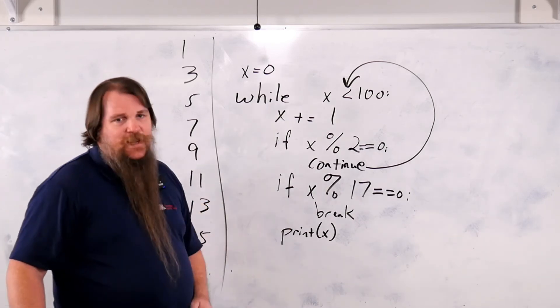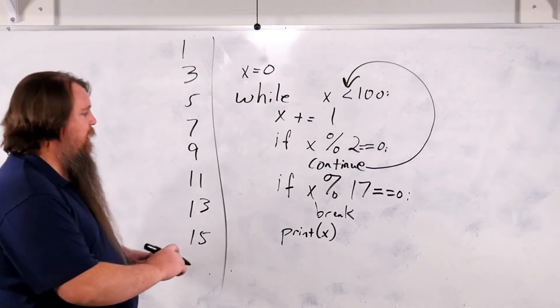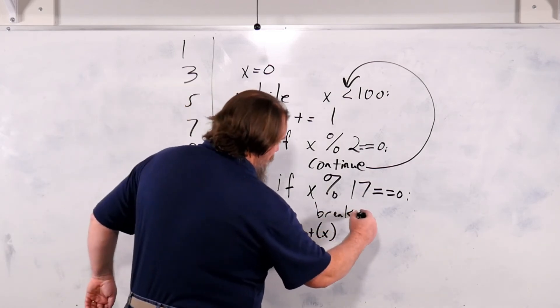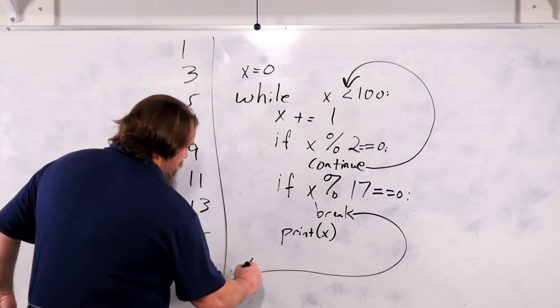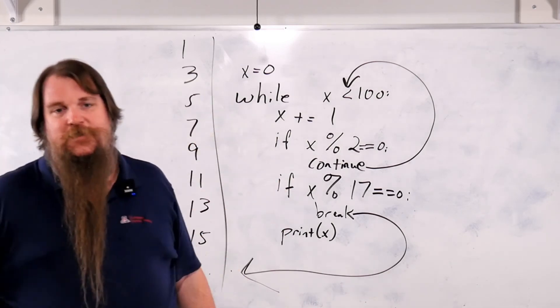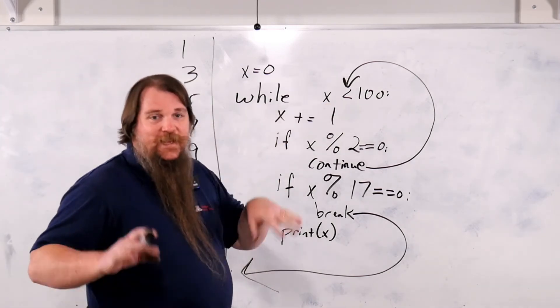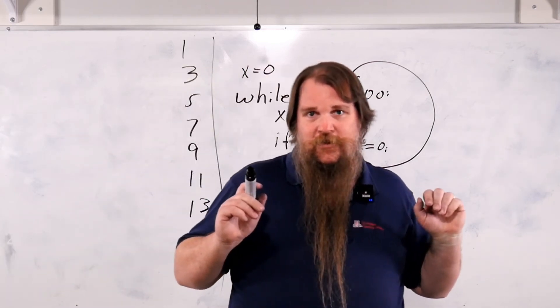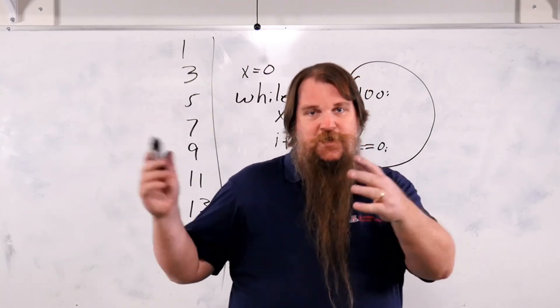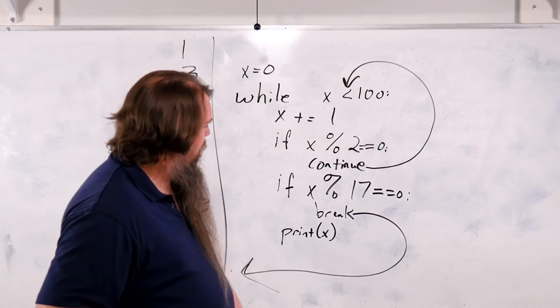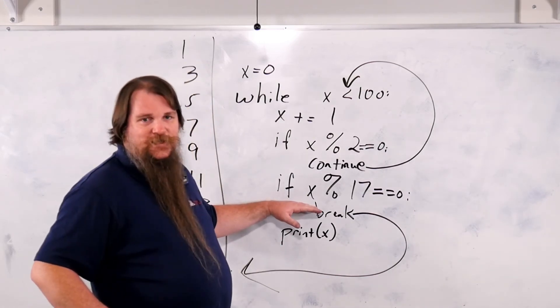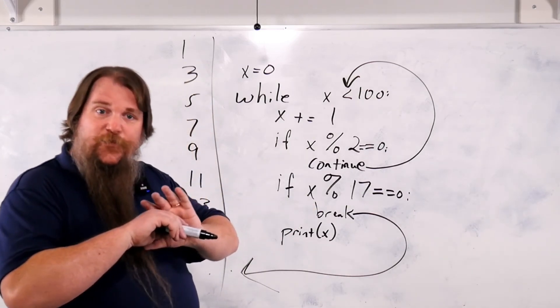What does a break statement do? Well, what a break statement does is it says go out of the loop entirely. Don't go back up to the top to see if you want to do more. So this loop says theoretically we're going to loop from 0 to 100, but we don't really. As soon as we hit 17, this loop ends forever.